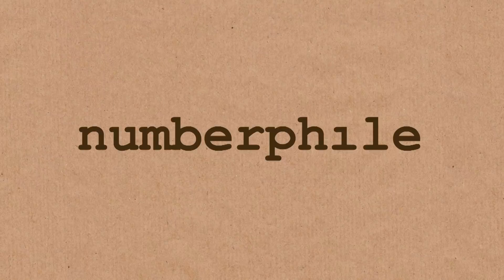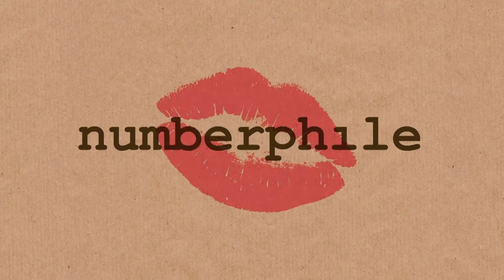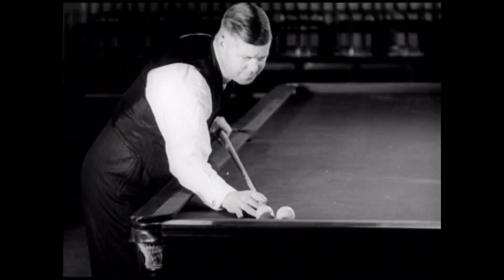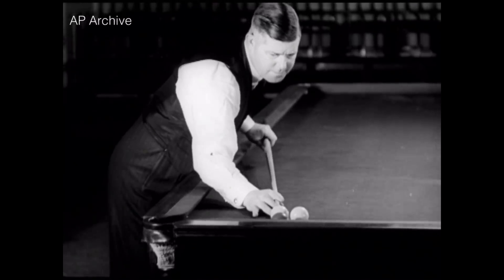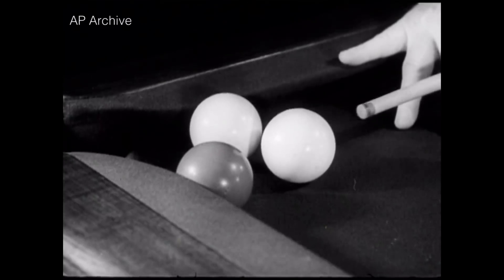We're going to be talking about kissing numbers, which is perhaps less exciting than it sounds. It sounds like we're taking the name of the channel a bit too far. Kissing numbers is actually about how many spheres we can fit around a central sphere. It comes from billiards — when two billiards make contact, they kiss.